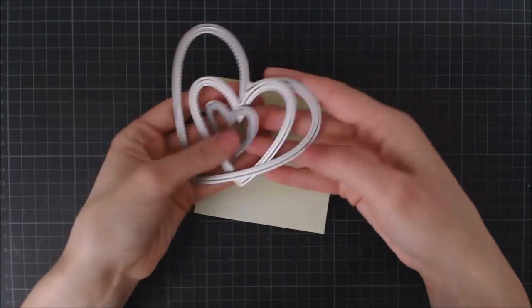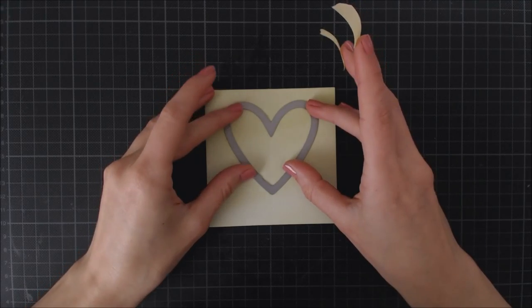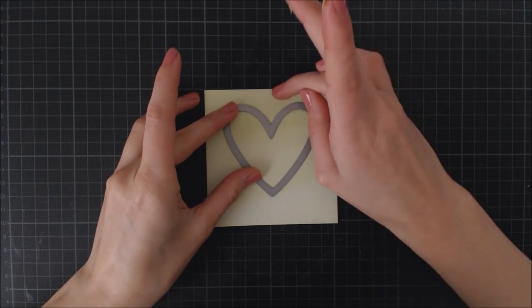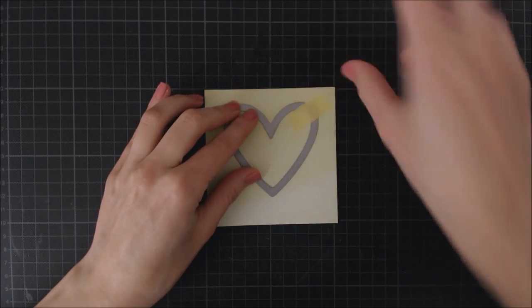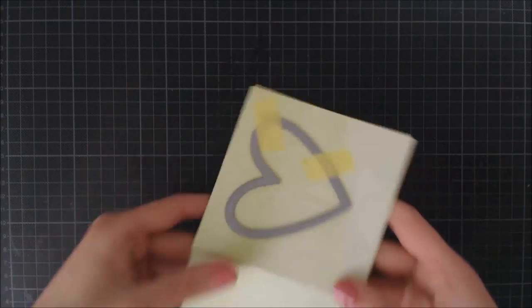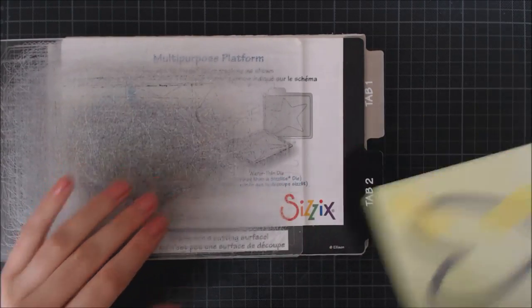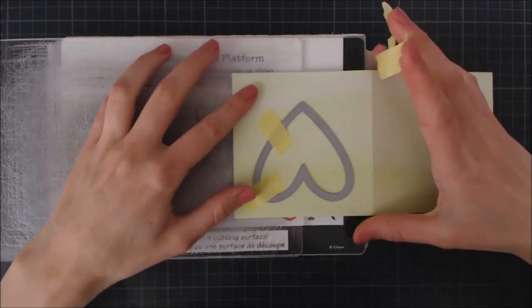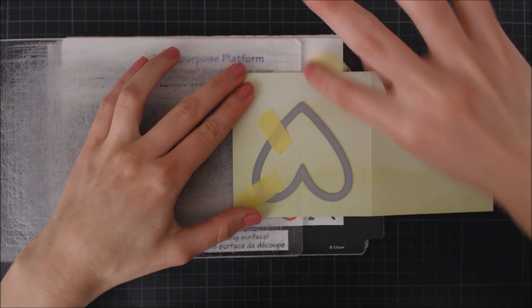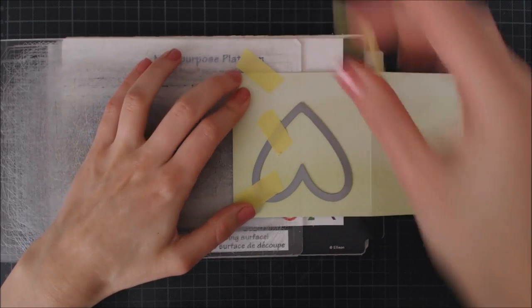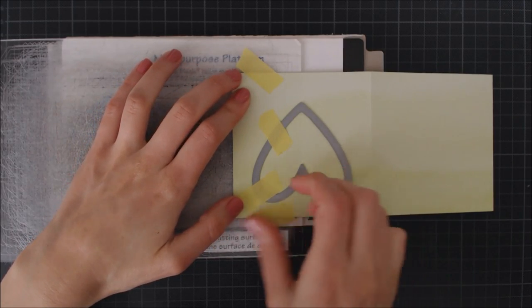I'm going to be using the mid-sized heart from the stitched heart dies by Lawn Fawn to do some partial die cutting. I'm securing my die on the card using some washi tape lining it up with the soft score line. Now I only want this to cut to the left side of the soft score line so I'm putting just this side between the cutting plates of my machine.